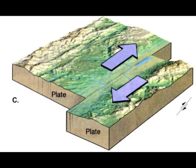Transform fault boundaries occur when two plates slide past each other horizontally without destroying the lithosphere. At a transform boundary, there are no volcanoes. Most transform faults are in ocean basins, but some go through continental lithosphere. An example of this would be the Alpine Fault in New Zealand.